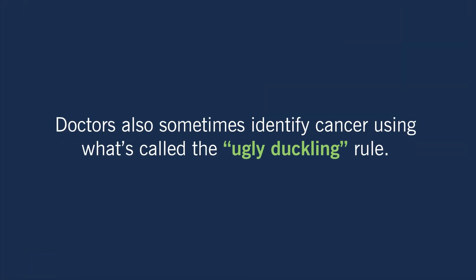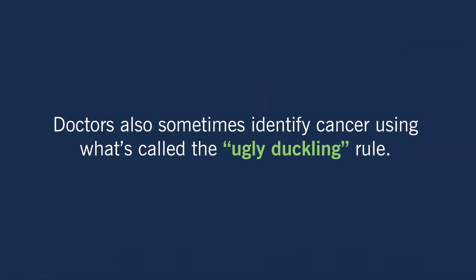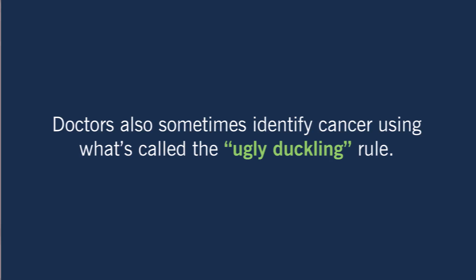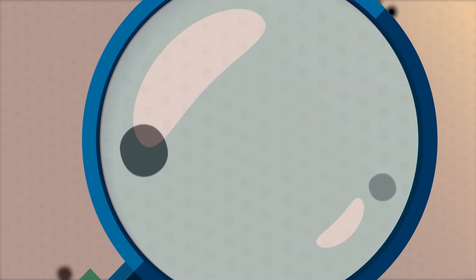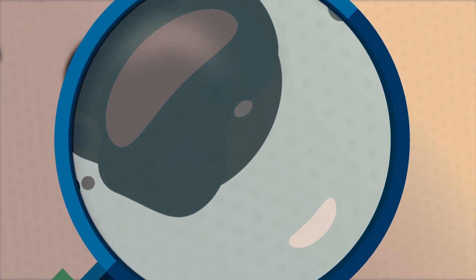Doctors sometimes identify cancer using what's called the ugly duckling rule. If you have a mole that looks different from other moles nearby, perhaps it's bigger or lighter in color, that could be a warning sign.